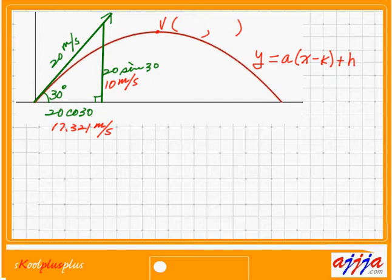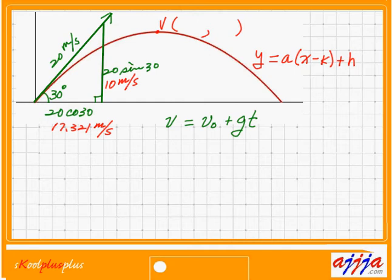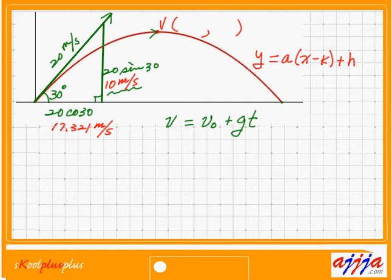Step number one: find the time. We use the kinematic equation: final velocity equals initial velocity plus g times t. The time going up to the top equals the time coming back down — they are exactly the same. At the top, final velocity is 0 meters per second. Coming back down, the final speed on the ground is the same as the initial upward speed: 10 meters per second.